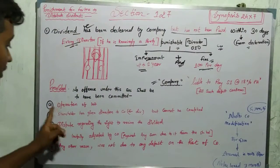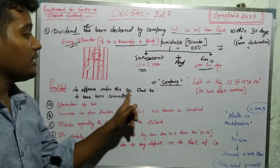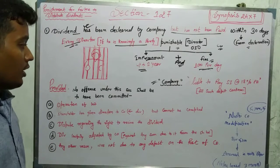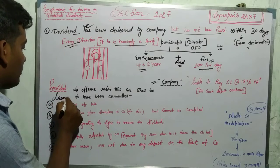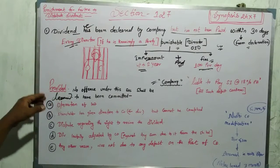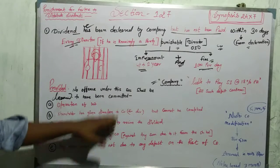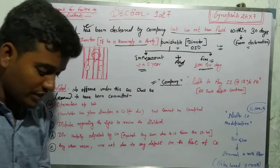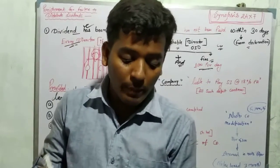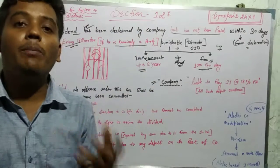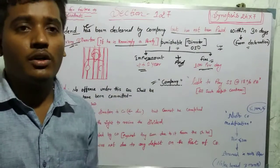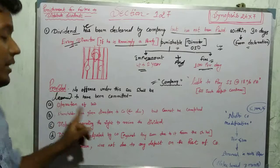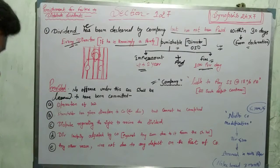The first exception is provided no offense under this section shall be deemed to be committed where the dividend could not be paid by reason of operation of law. If there was a regulation of law preventing payment, then it's allowed by law.